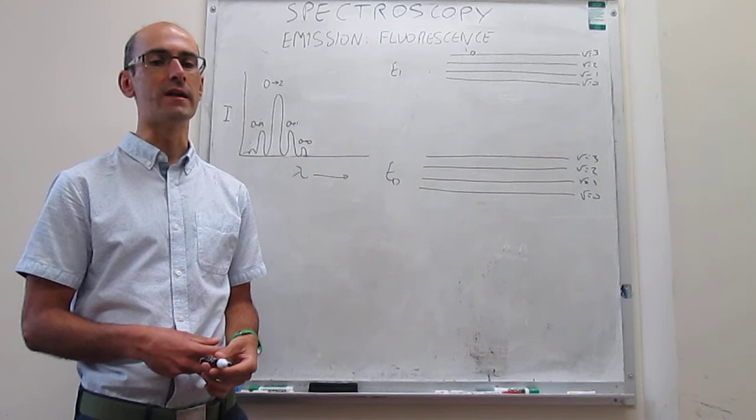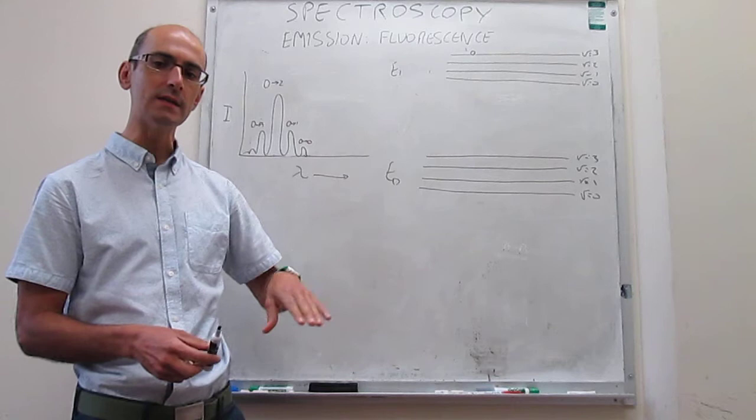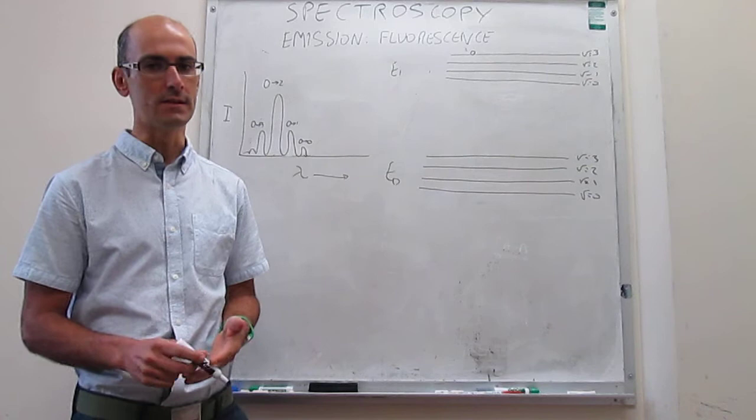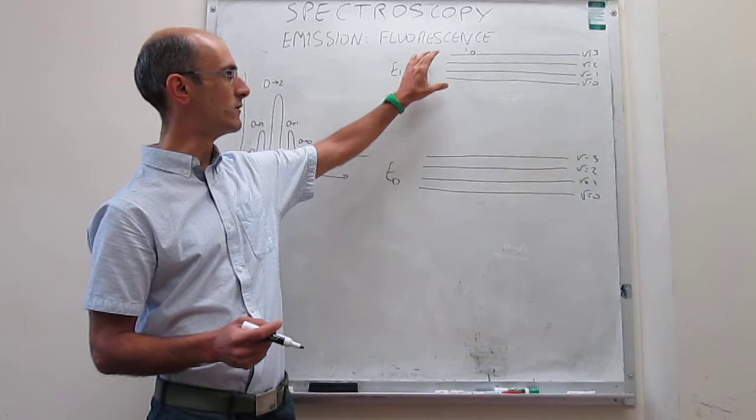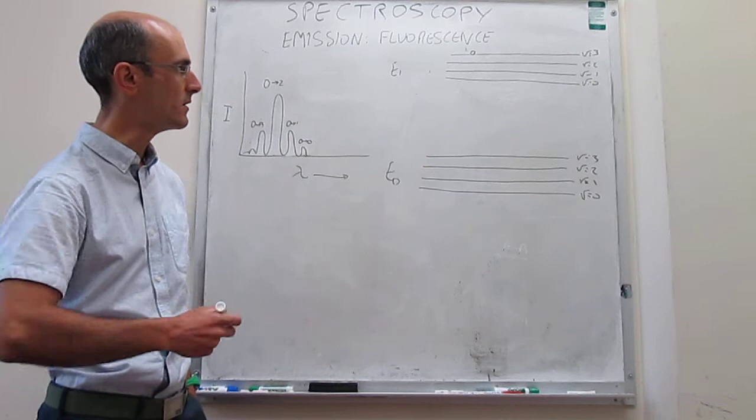What we're interested in are mechanisms to return to the ground state that do involve photons — those are called radiative processes. Fluorescence is a type of radiative process for a system to return from an excited electronic state to a ground electronic state.